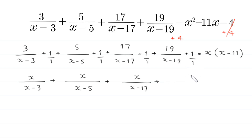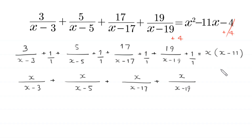We write the denominator of 1 and take LCM that is (x minus 19). 19 plus (x minus 19) will become x, and we move this expression to the left hand side. This will become negative x times (x minus 11) is equal to 0.